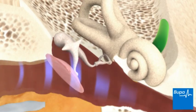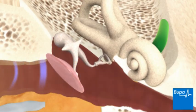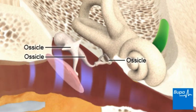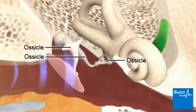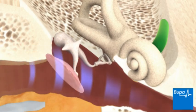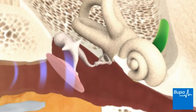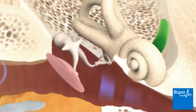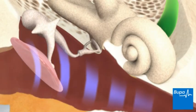The middle ear contains three tiny bones called the ossicles. These are joined together and to the eardrum. They amplify the sound wave and pass it on to the inner ear. Here we show the ossicles moving in response to the sound waves.